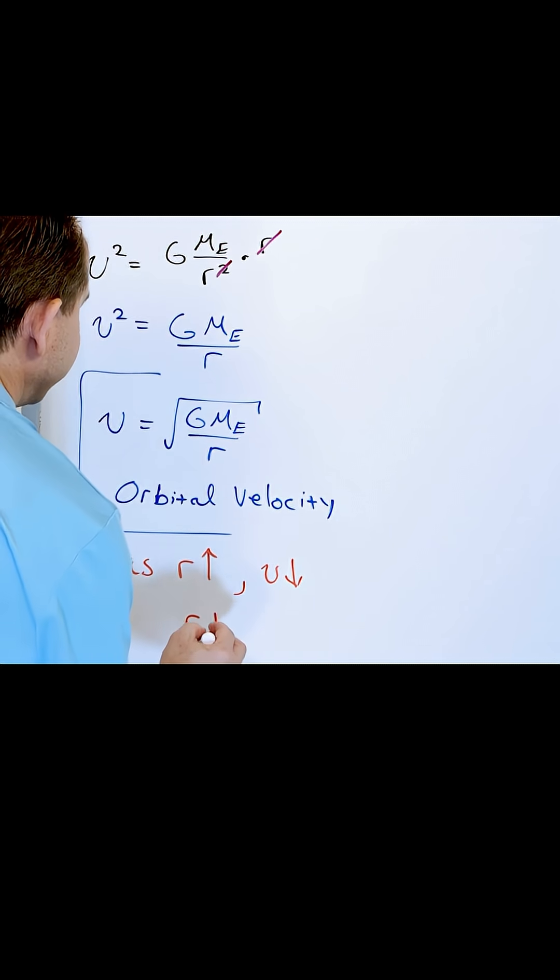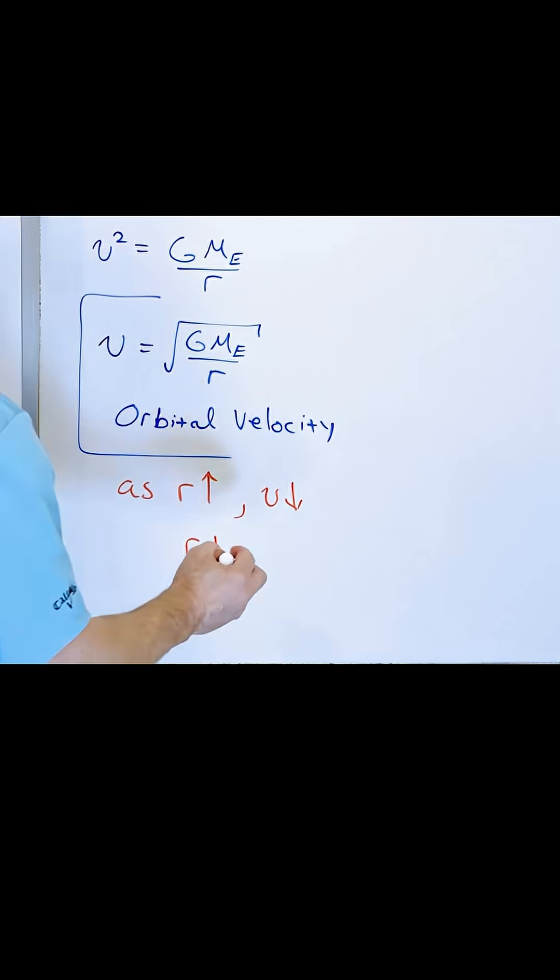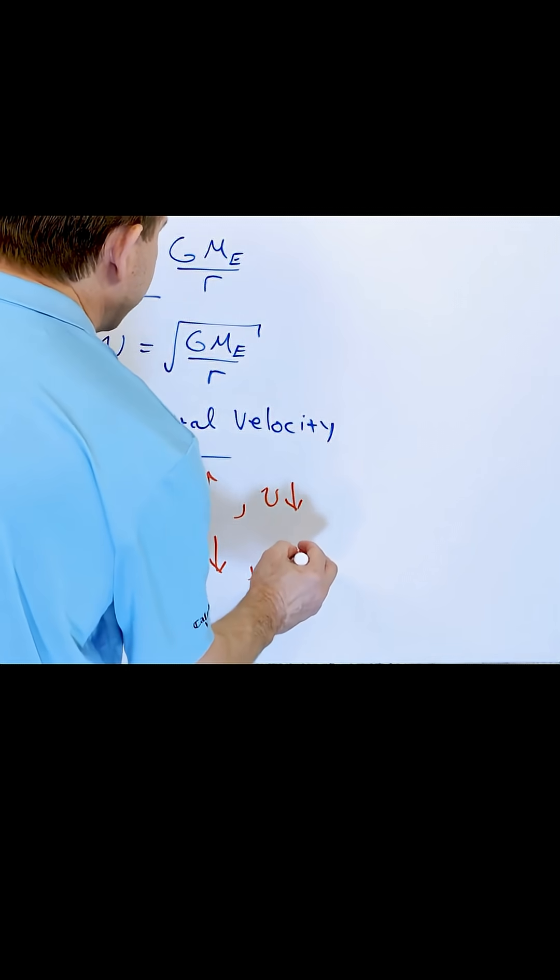And as the radius goes down, or as I orbit closer and closer to the planet, the orbital speed goes up.